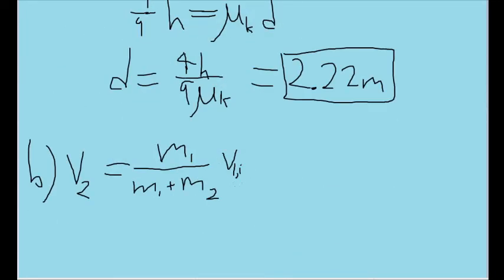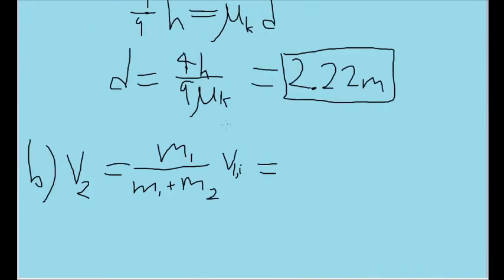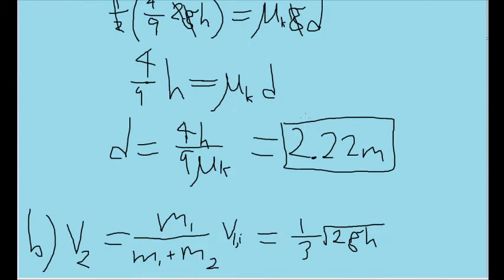Using a similar method of simplification that we did for part A, once again substituting the square root of 2gh in for the initial speed of block 1, and substituting M2 for 2 times M1 and simplifying that way, we find that this formula simplifies down to one third times the square root of 2gh. Once again, basically the same thing we had earlier except without this 2 in the top.